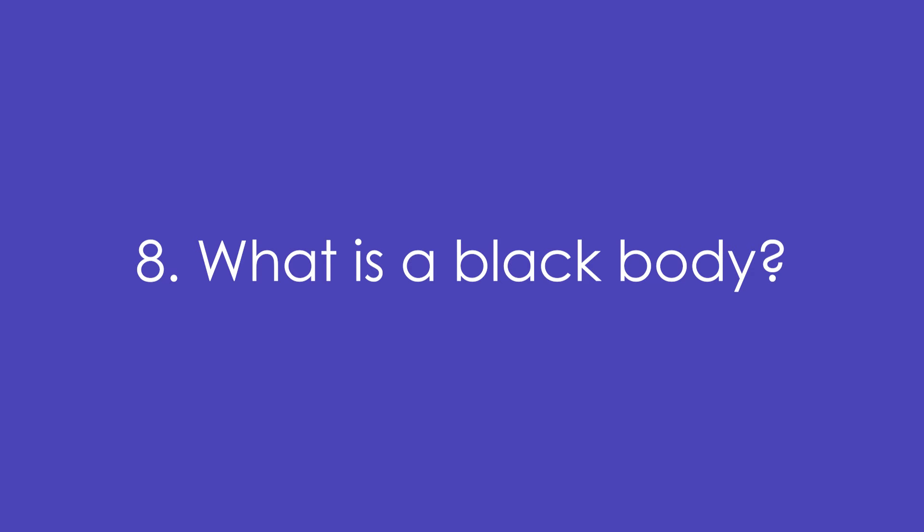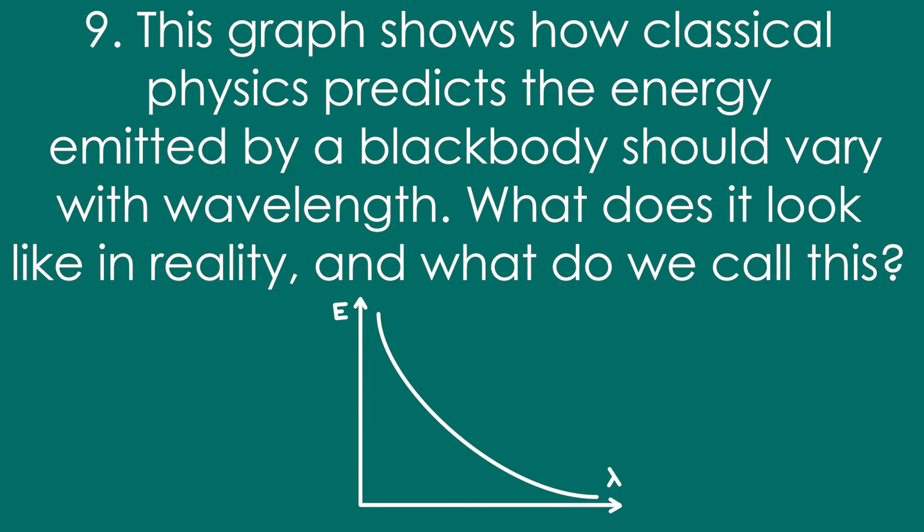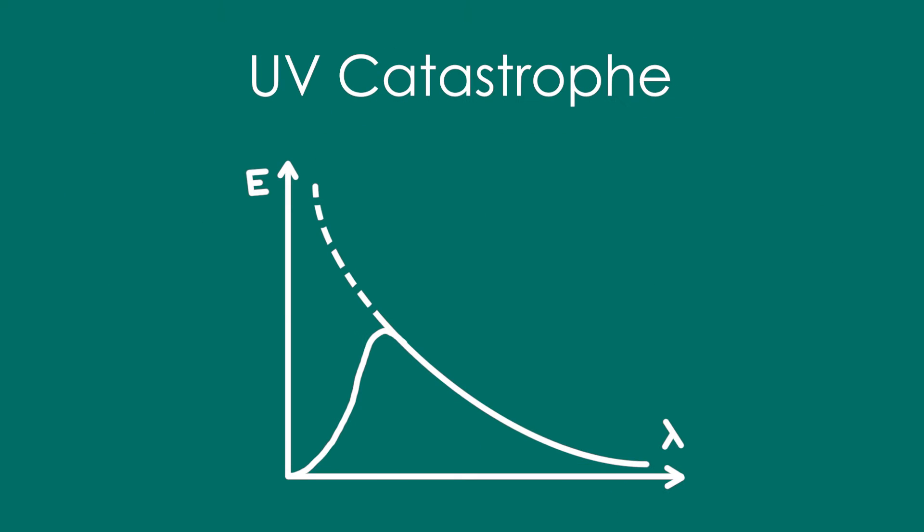Question 8: What is a black body? It's a theoretically ideal object that absorbs and emits all wavelengths of EM. Question 9: This graph shows how classical physics predicts the energy emitted by a black body should vary with wavelength. What does it look like in reality and what do we call this? Instead of infinitely increasing with shorter wavelength, it actually curves back down when we get to very short wavelengths around UV. So that's why it's called the UV catastrophe.